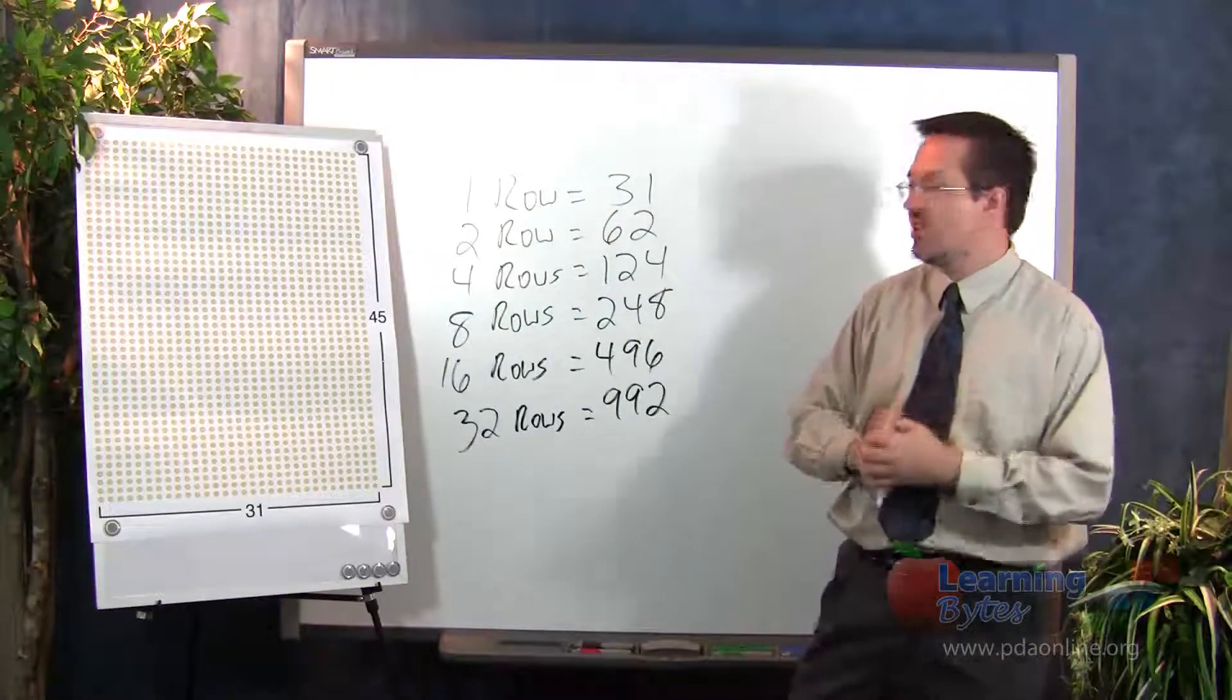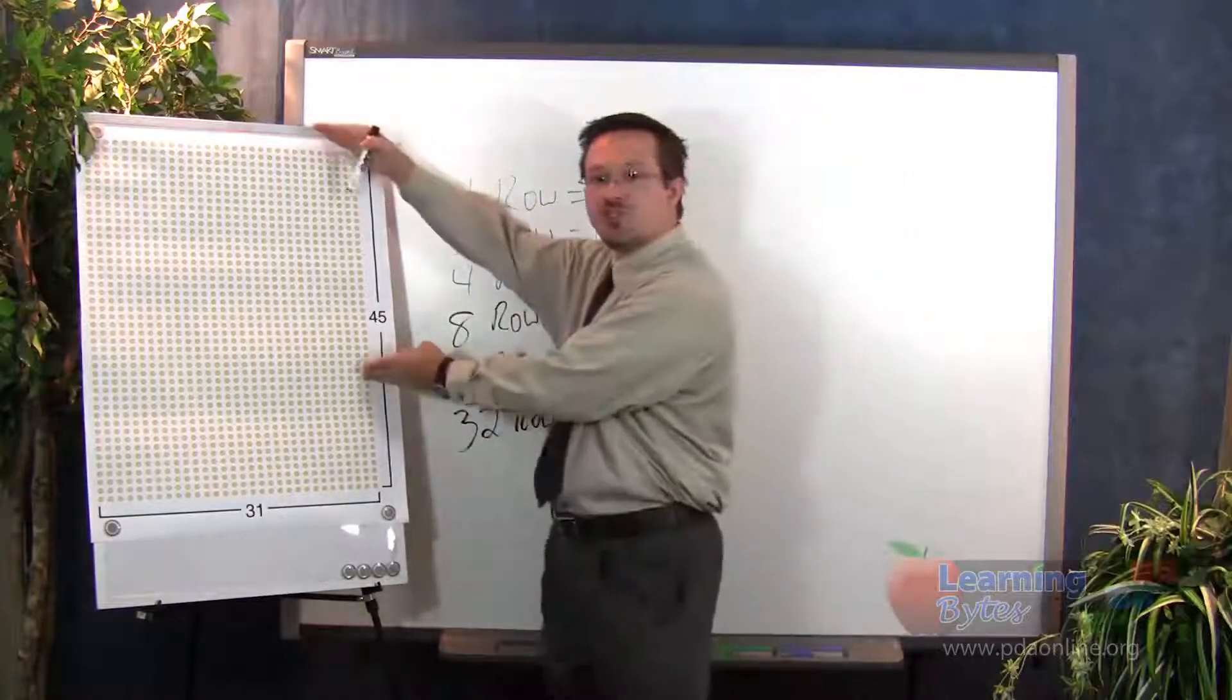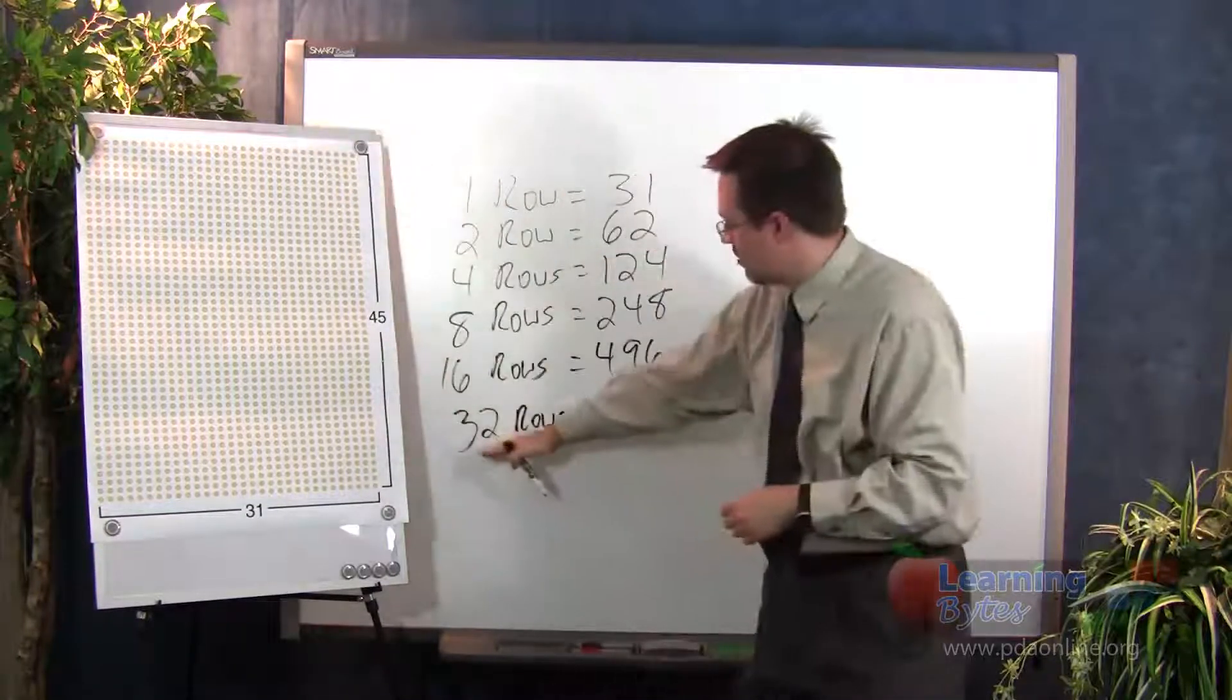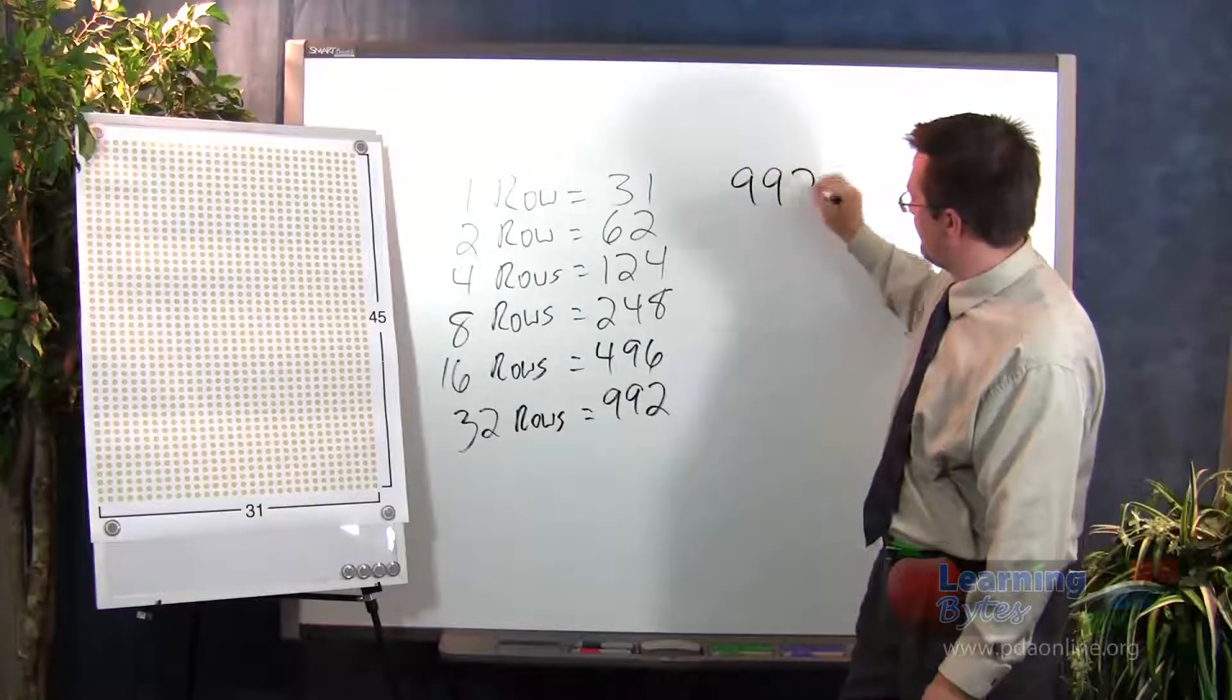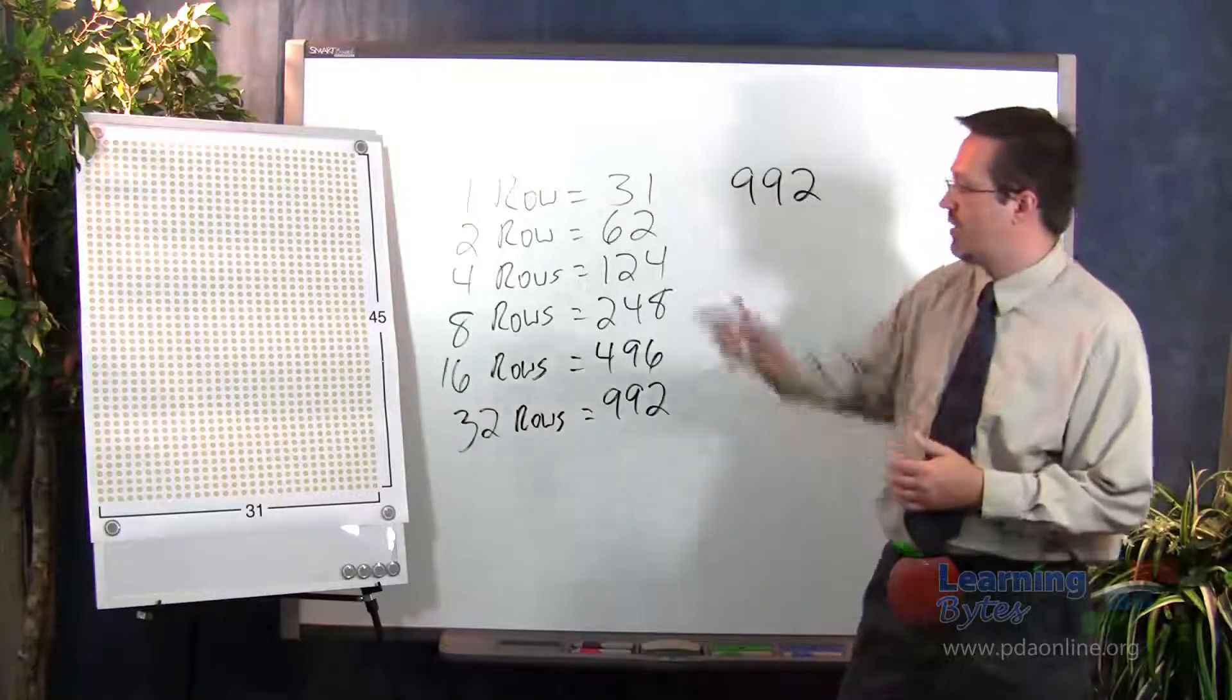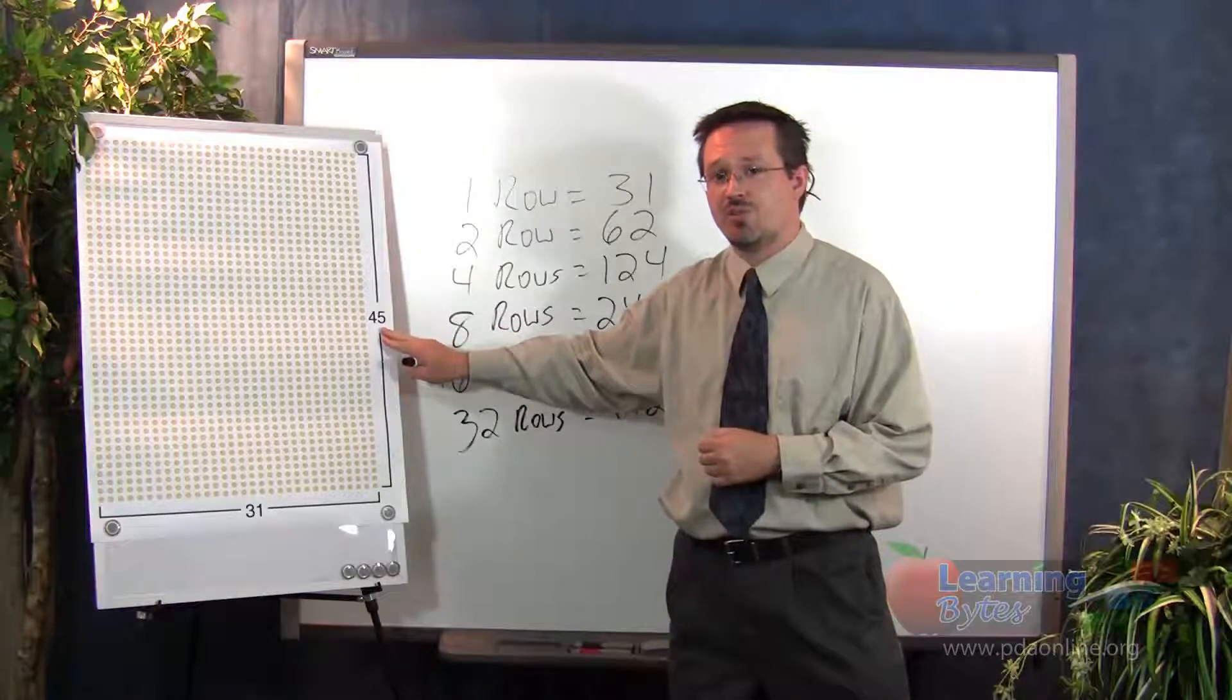Then you could say, okay, we want to find out how many students are in all 45 rows. Well, let's start out by taking out 32 of those rows, which is a relatively large chunk. So in 32 of those rows, we had 992 students. Well, how many rows does that leave us with? Well, if we had 45 rows and we're taking out 32, that leaves us with 13 rows.